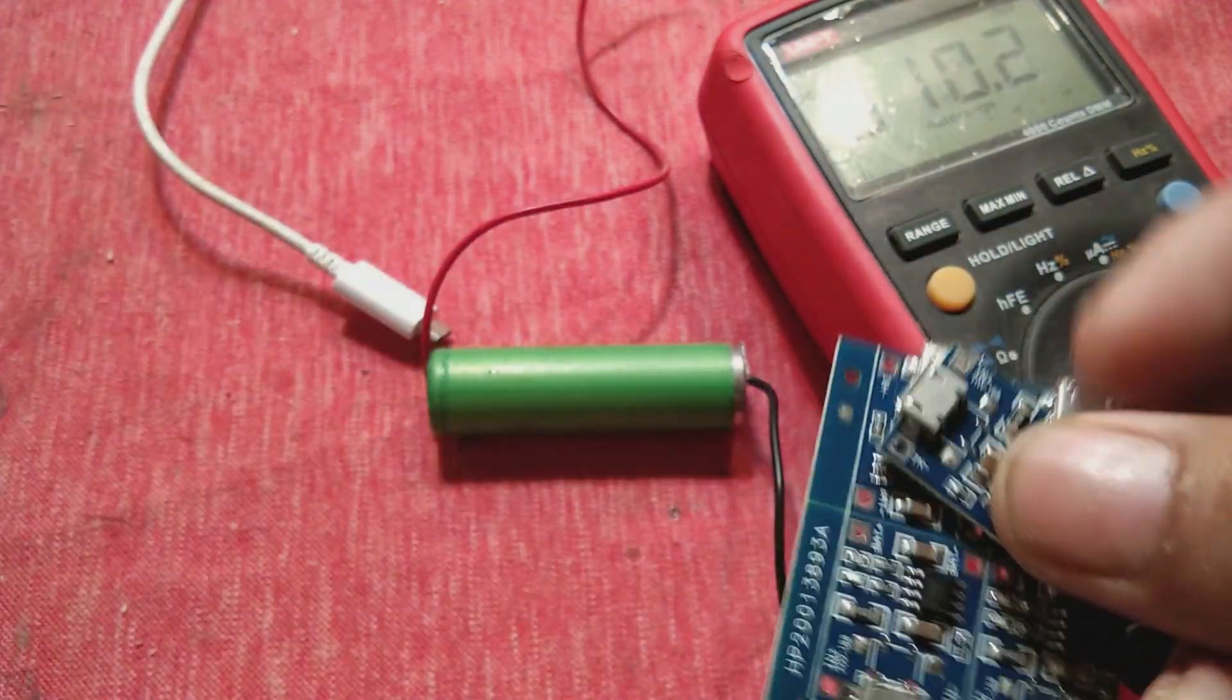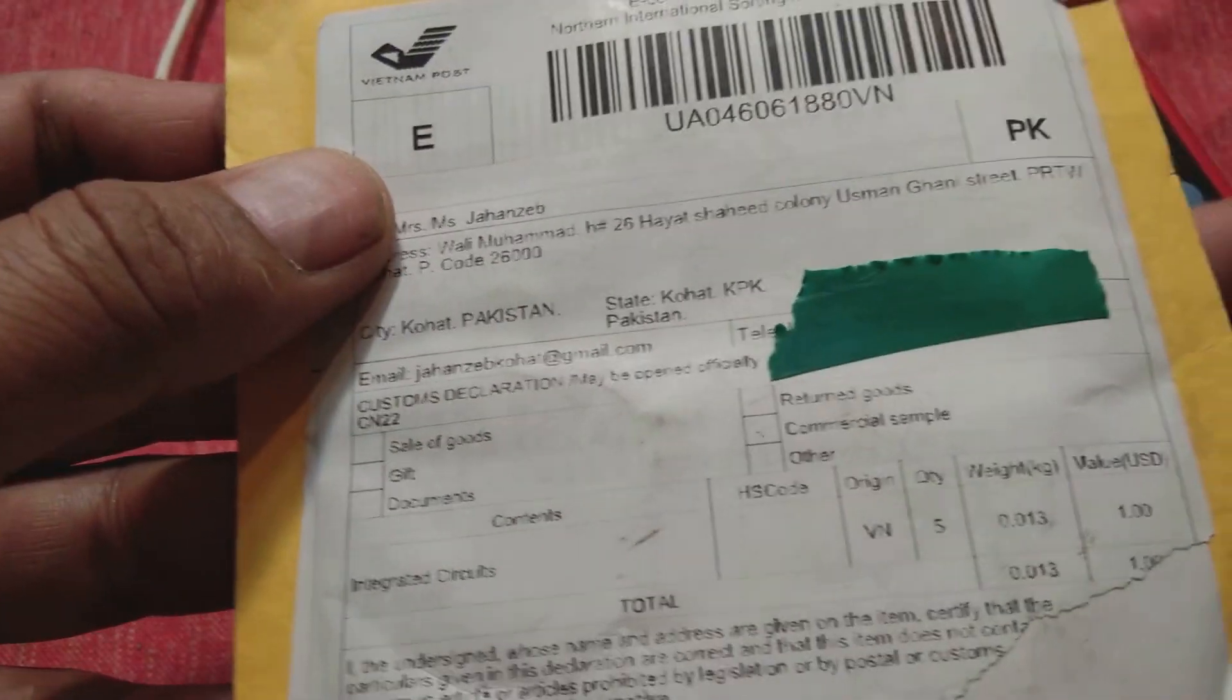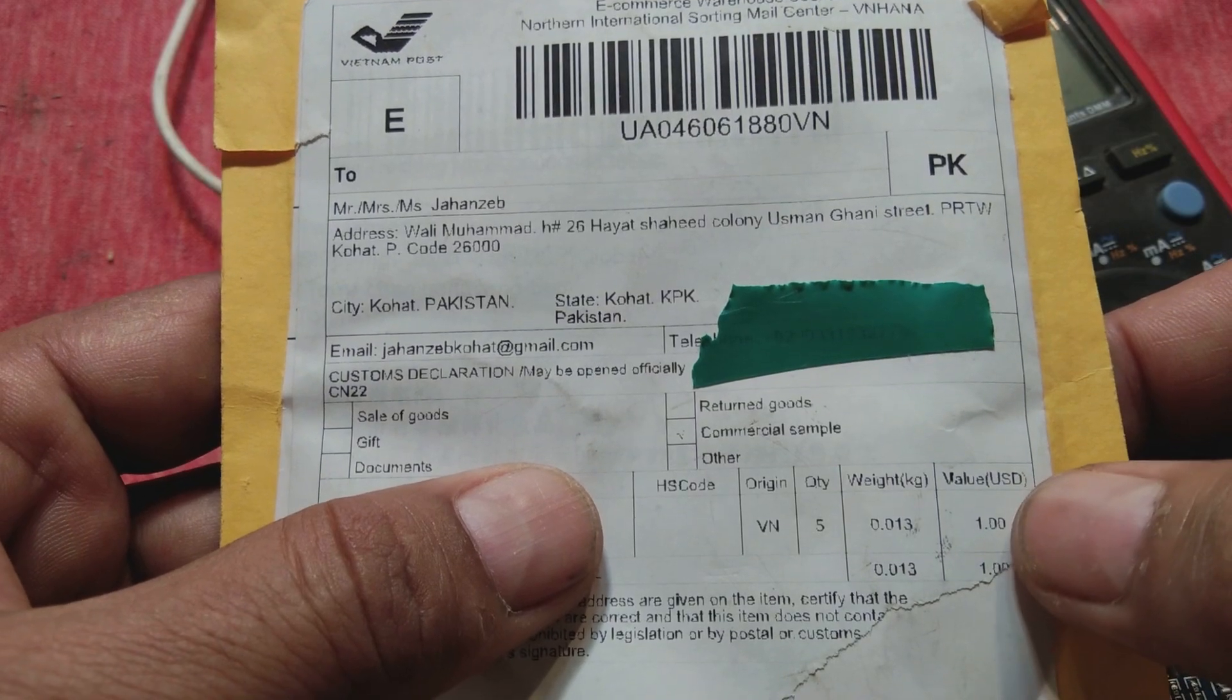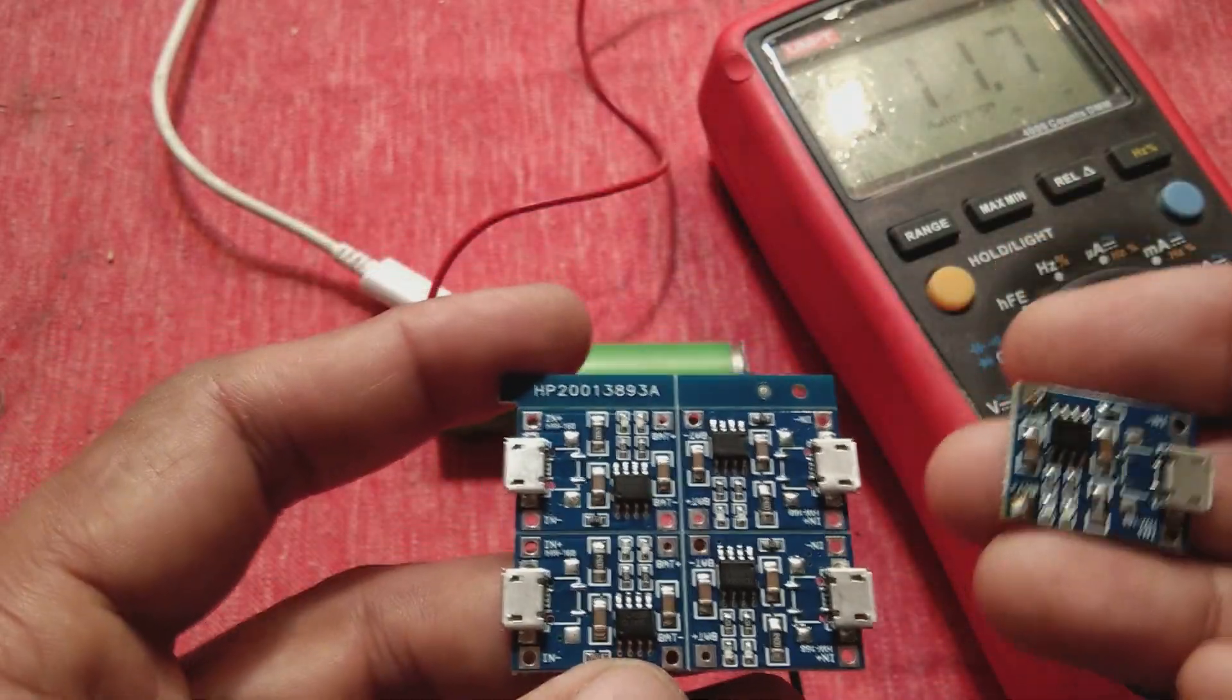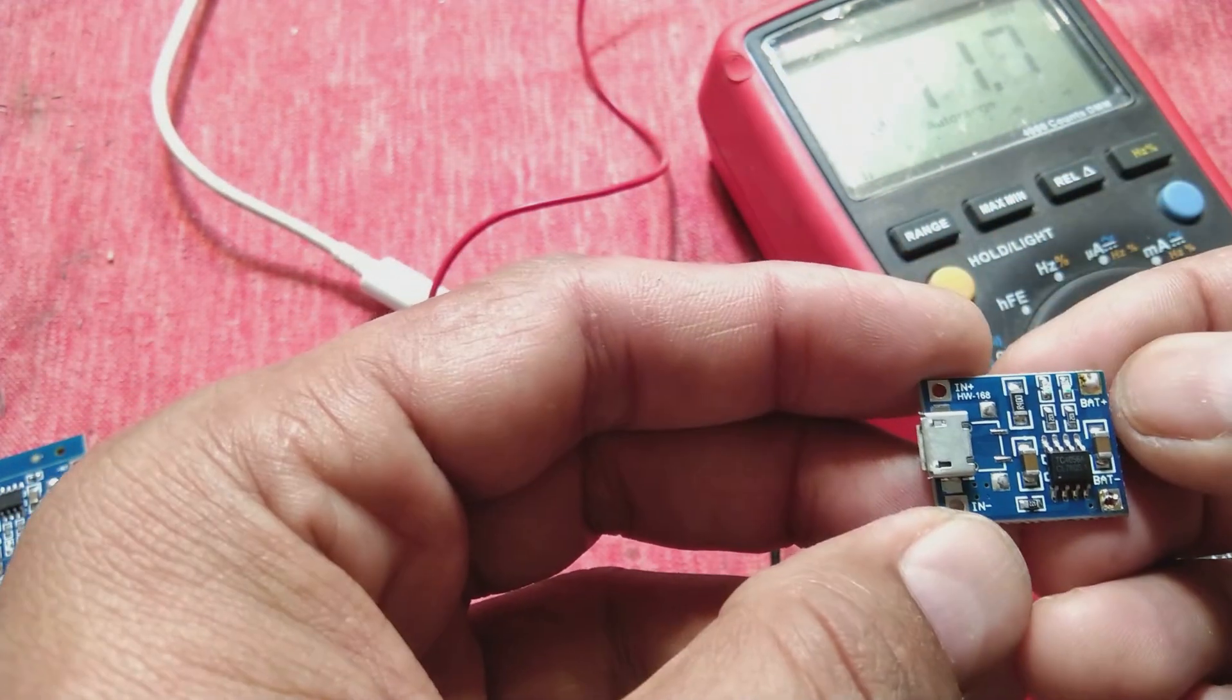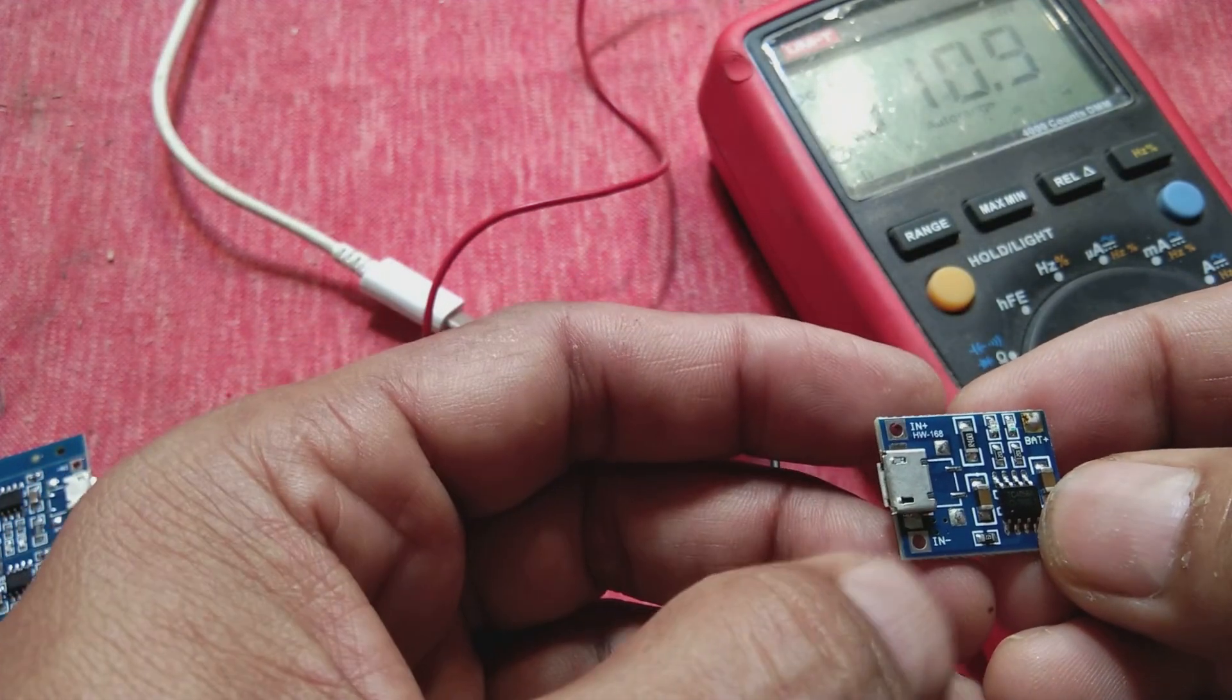These five modules I purchased from Aliexpress for about 86 cents total, delivered to my doorstep. You can see these are very simple modules - there is battery plus (BT+), battery minus (BT-), and input plus and minus terminals.